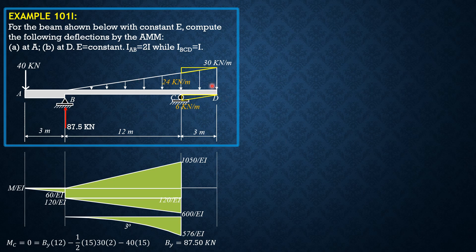The moment due to the uniform load is second degree: 30 times 3 times 1.5 is 135 over EI. Then the moment of the upward triangular load is one-half of 3 meters times 6, which is 9, times moment arm one-third of 3, giving 9 over EI, and it is a third-degree curve.